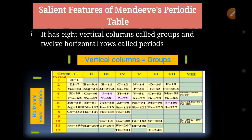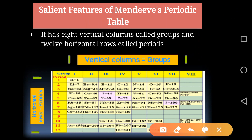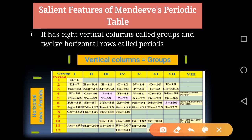The first salient feature of Mendeleev's periodic table is that it has 8 vertical columns called groups and 12 horizontal rows called periods. The vertical columns are the groups and the horizontal rows are the periods. So, Mendeleev's periodic table has 8 groups and 12 periods.